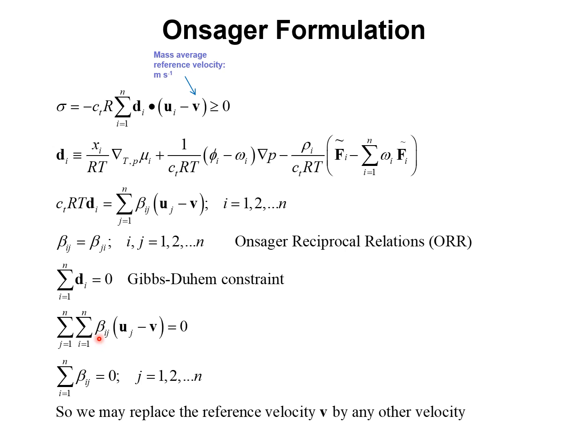This leads to the conclusion that the sum over all components i to n of beta i, j must be equal to zero. And a consequence of this constraint is that we may replace the reference velocity v here, which is the mass average reference velocity, by any other arbitrarily chosen velocity.